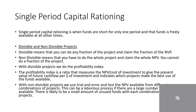Divisible means that you can do any fraction of the project and claim the fraction of the NPV. Non-divisible means that you have to do the whole project and claim the whole NPV — you cannot do a fraction of the project. With divisible projects, we use the profitability index. The profitability index is a ratio that measures NPV divided by cost of investment, giving the present value of future cash flow per dollar of investment, and indicates which projects make the best use of the funds available.